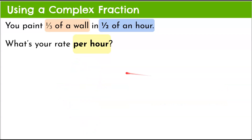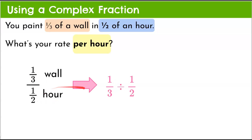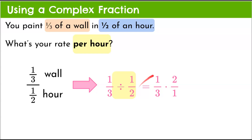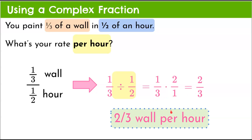Our fourth way is the complex fraction: one-third of a wall over one-half of an hour, rewritten as one-third divided by one-half. Keep, change to multiplication, and flip — multiply by the reciprocal. So one-third multiplied by two over one. Multiply numerators: two. Multiply denominators: three. We get two-thirds, or two-thirds of a wall per hour.